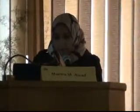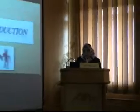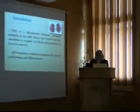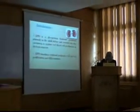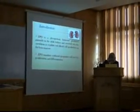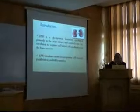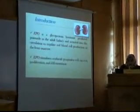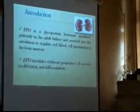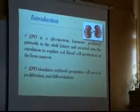This presentation covers some aspects of carbohydrate and lipid metabolism in obese and diabetic rats. Erythropoietin is a glycoprotein hormone produced primarily in the adult kidney and secreted into the circulation to regulate red blood cell production in the bone marrow.